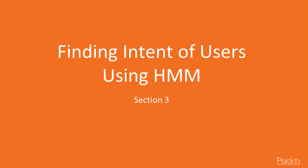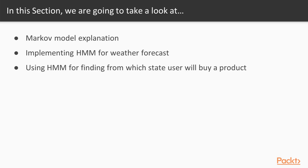Welcome! This is the third section of our course. In this section, we'll be finding the intent of users using a hidden Markov model. We'll start with a Markov model explanation, then implement a hidden Markov model for weather forecasting. At the end, we'll use a hidden Markov model to find from which state a user will buy a product with the highest probability. It will be very interesting, so stay tuned!